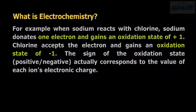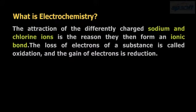Chlorine accepts the electron and gains an oxidation state of minus one. The sign of the oxidation state, positive or negative, actually corresponds to the value of each ion's electronic charge. The attraction of the differently charged sodium and chlorine ions is the reason they then form an ionic bond.